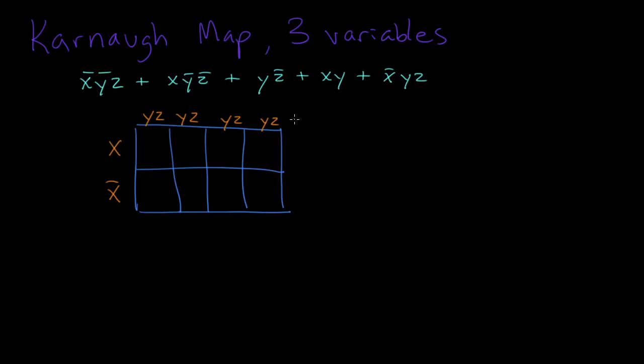Don't forget that you need to use a gray code to write these variables across the top. The gray code is so that between each column, only one variable is changing at a time.